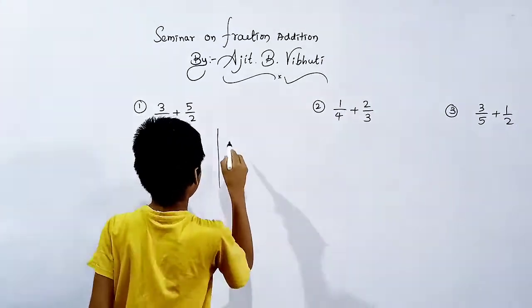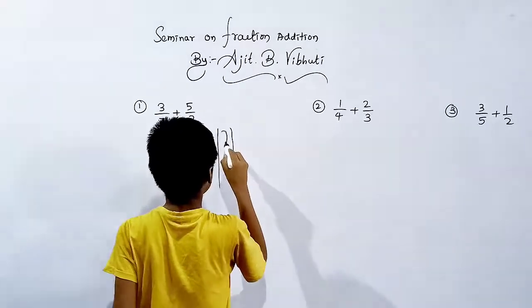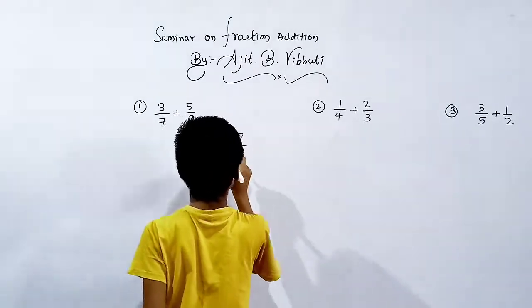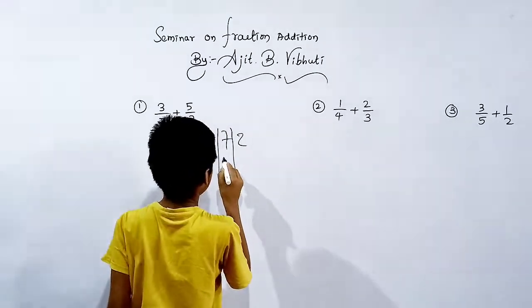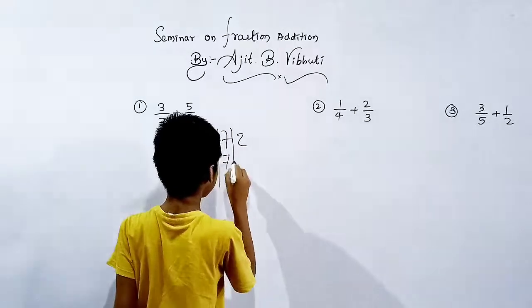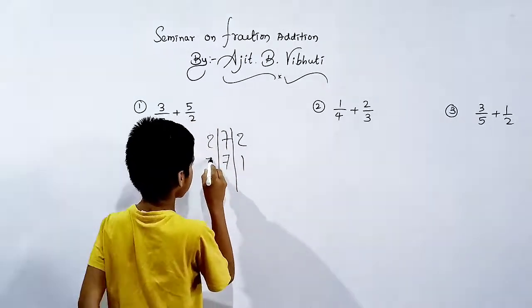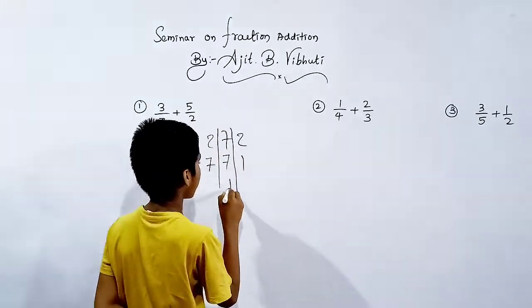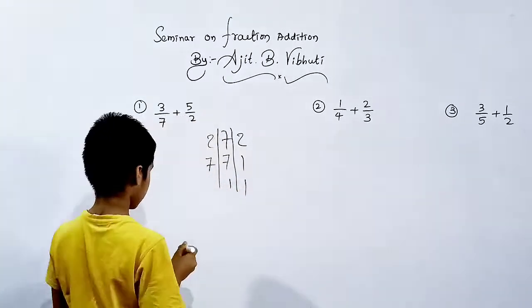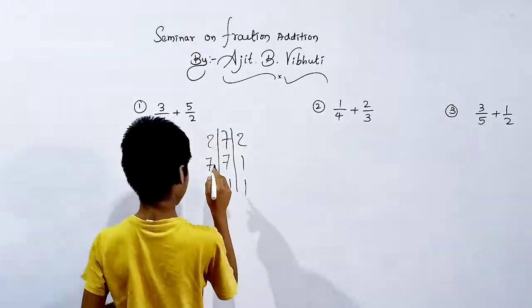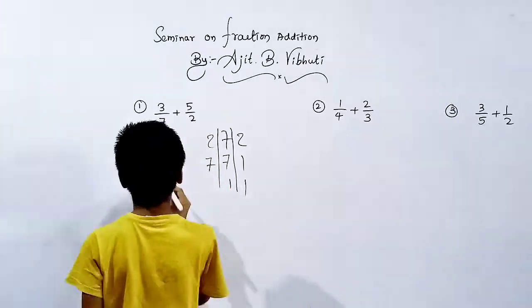LCM of 7 and 2. 7 as it is: 7, 14, 21... 2, 4, 6... LCM equals 14.